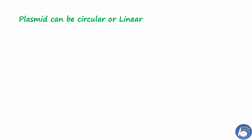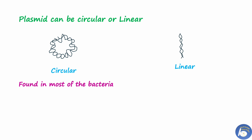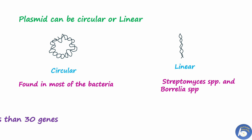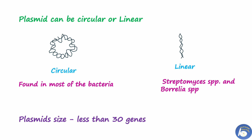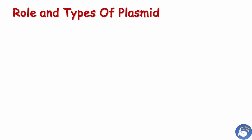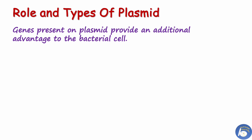Plasmids can be circular or linear, but most known plasmids are circular. Linear plasmids can be seen in Streptomyces species and Borrelia species. Plasmids are also small in size — they usually have less than 30 genes. A bacterial cell can easily survive without a plasmid.